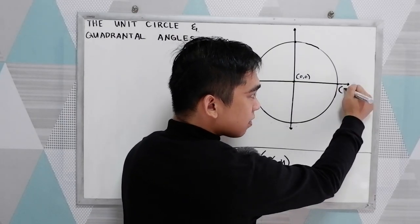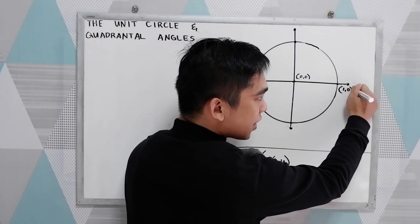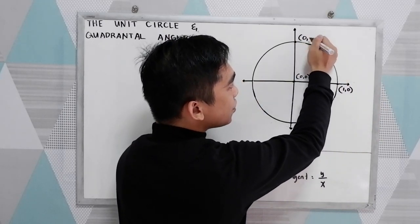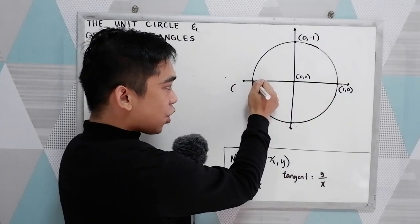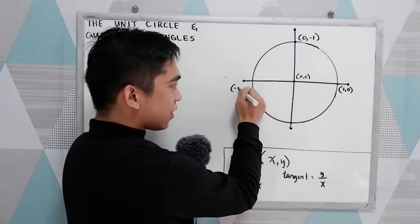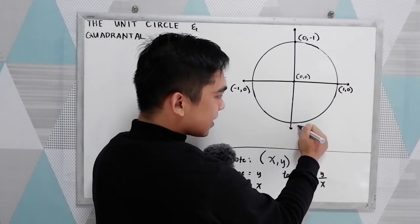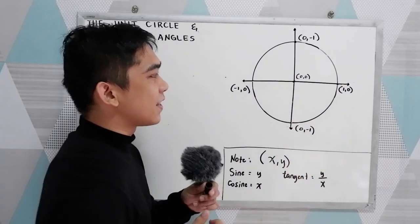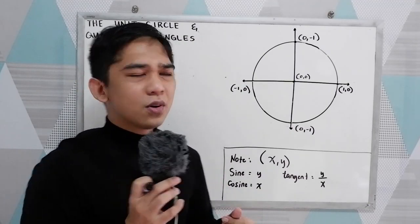So if this is 1, that would give us the coordinate (1, 0). This gives us (0, 1). This coordinate is (−1, 0). And this is (0, −1). That is our unit circle.